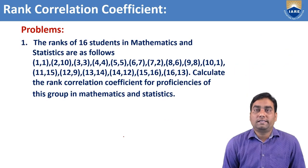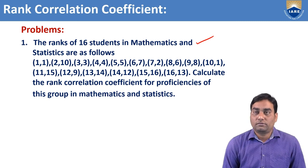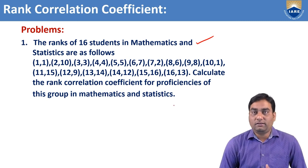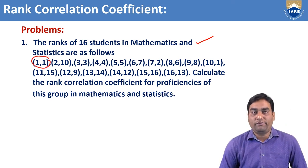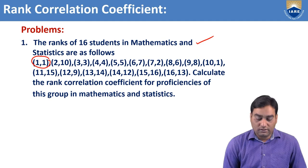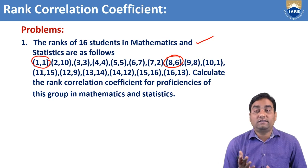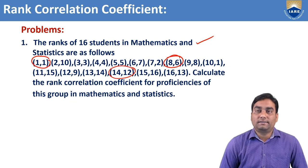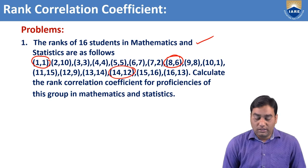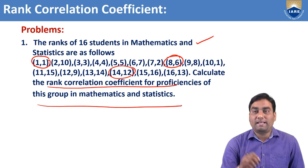The ranks of 16 students in mathematics and statistics are as follows. One student got first rank in mathematics and first rank in statistics. Another student got eighth rank in mathematics and 16th rank in statistics. Another student got 14th rank in mathematics and 12th rank in statistics. Like that, we have 16 students' data. Now, calculate the rank correlation coefficient for the proficiency of this group in mathematics and statistics.